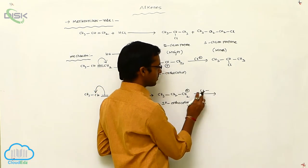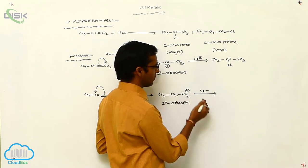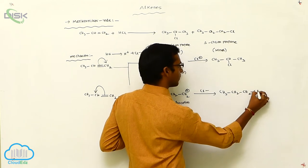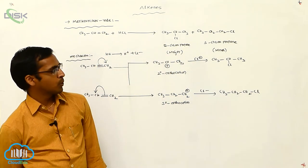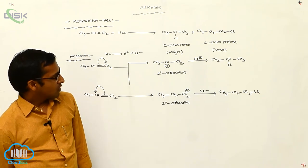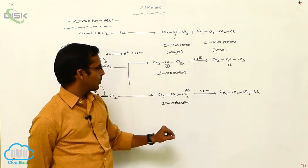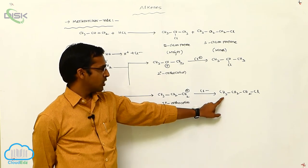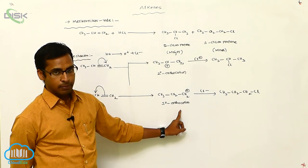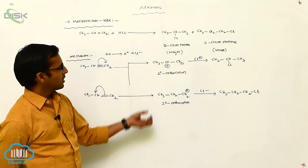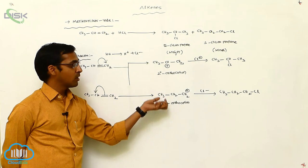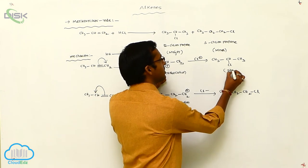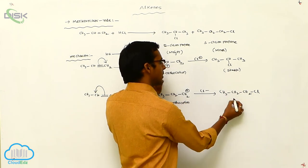When the negative charge is attached to the carbon with a greater number of hydrogen atoms, it gives CH3CH2CH2Cl — that is 1-chloropropane. During the formation of 2-chloropropane, a secondary carbocation is formed, whereas during the formation of 1-chloropropane, a primary carbocation is formed. Since the secondary carbocation is more stable than the primary carbocation, 2-chloropropane is the major product and 1-chloropropane is the unstable minor product.